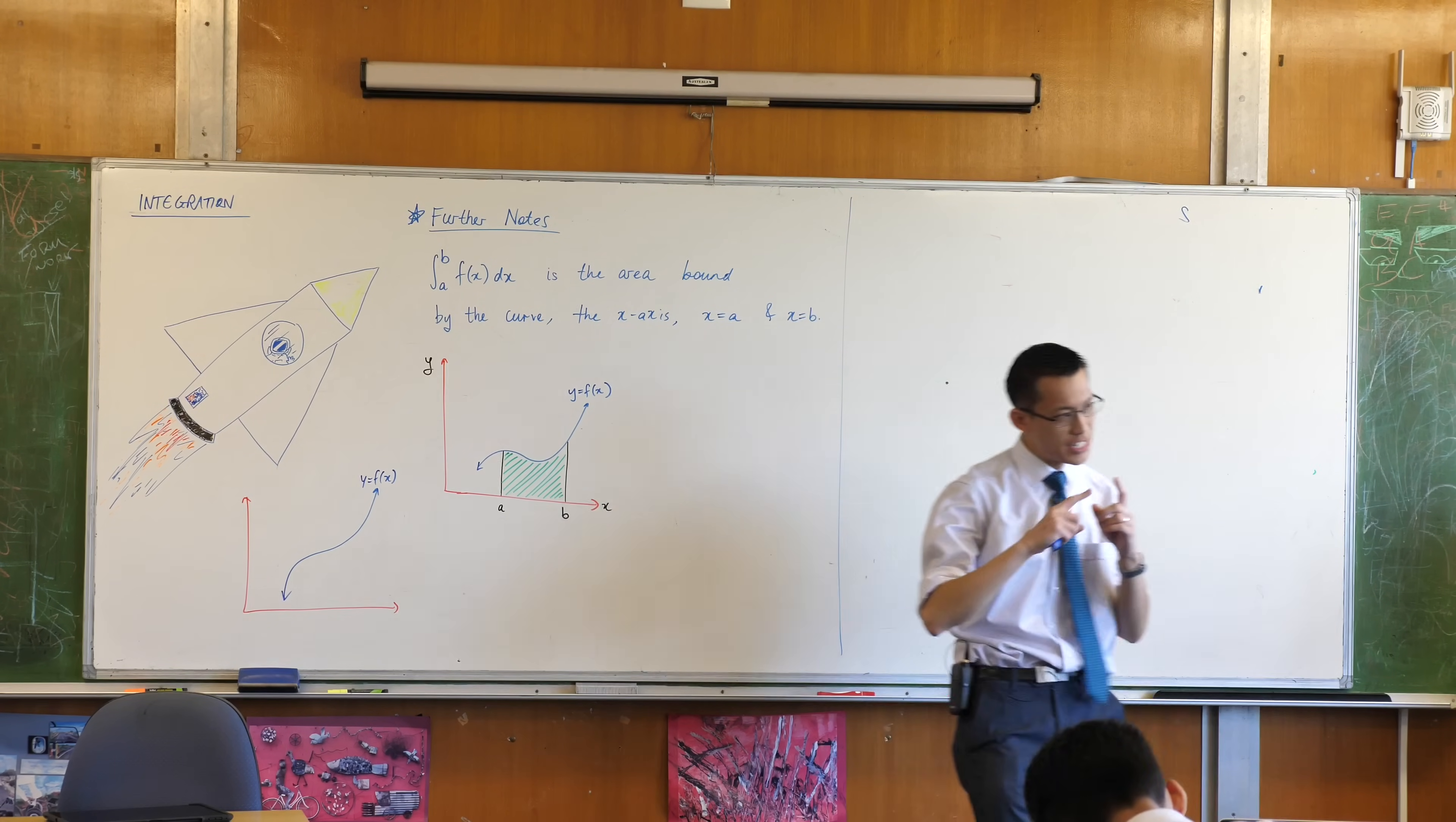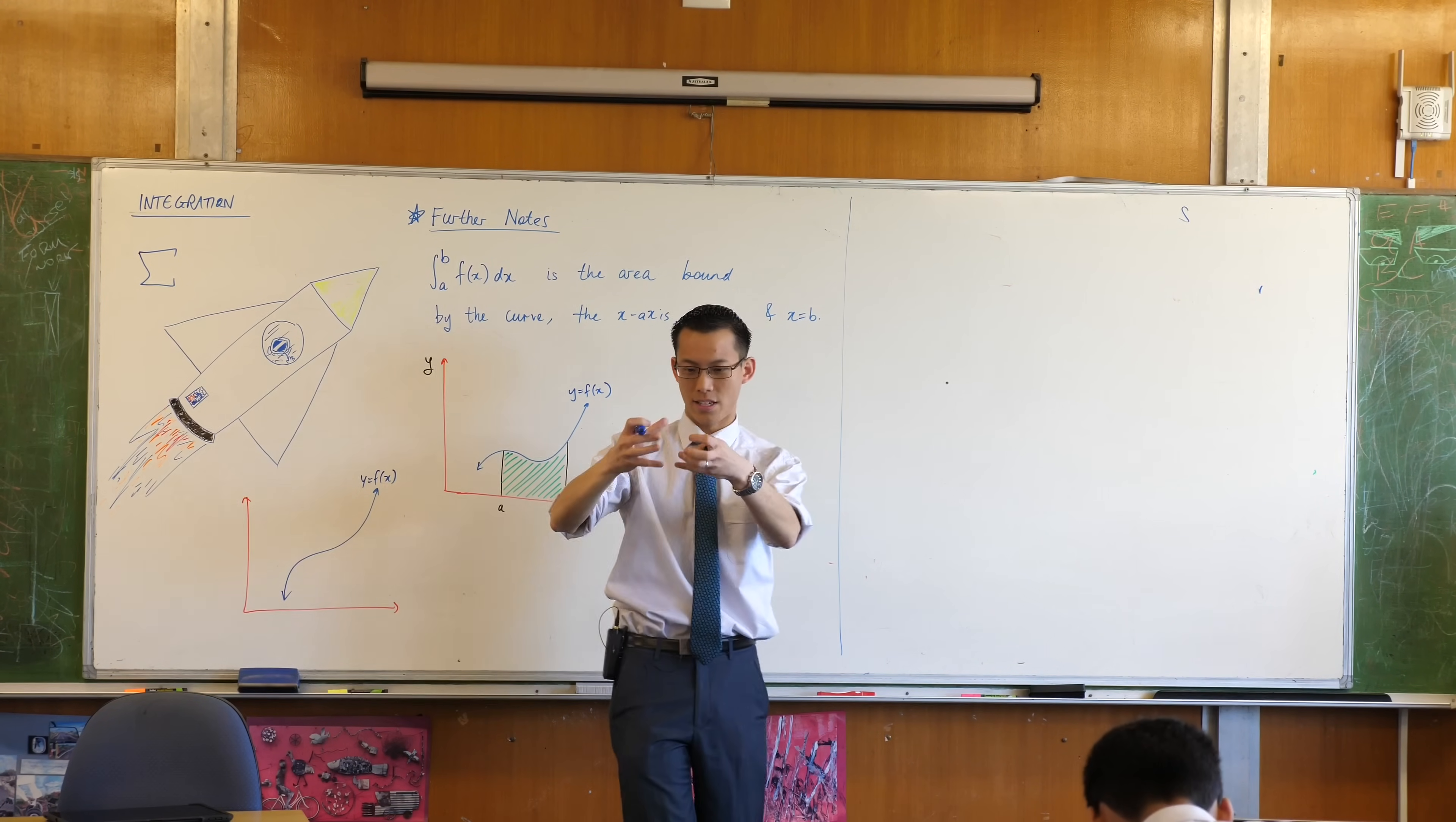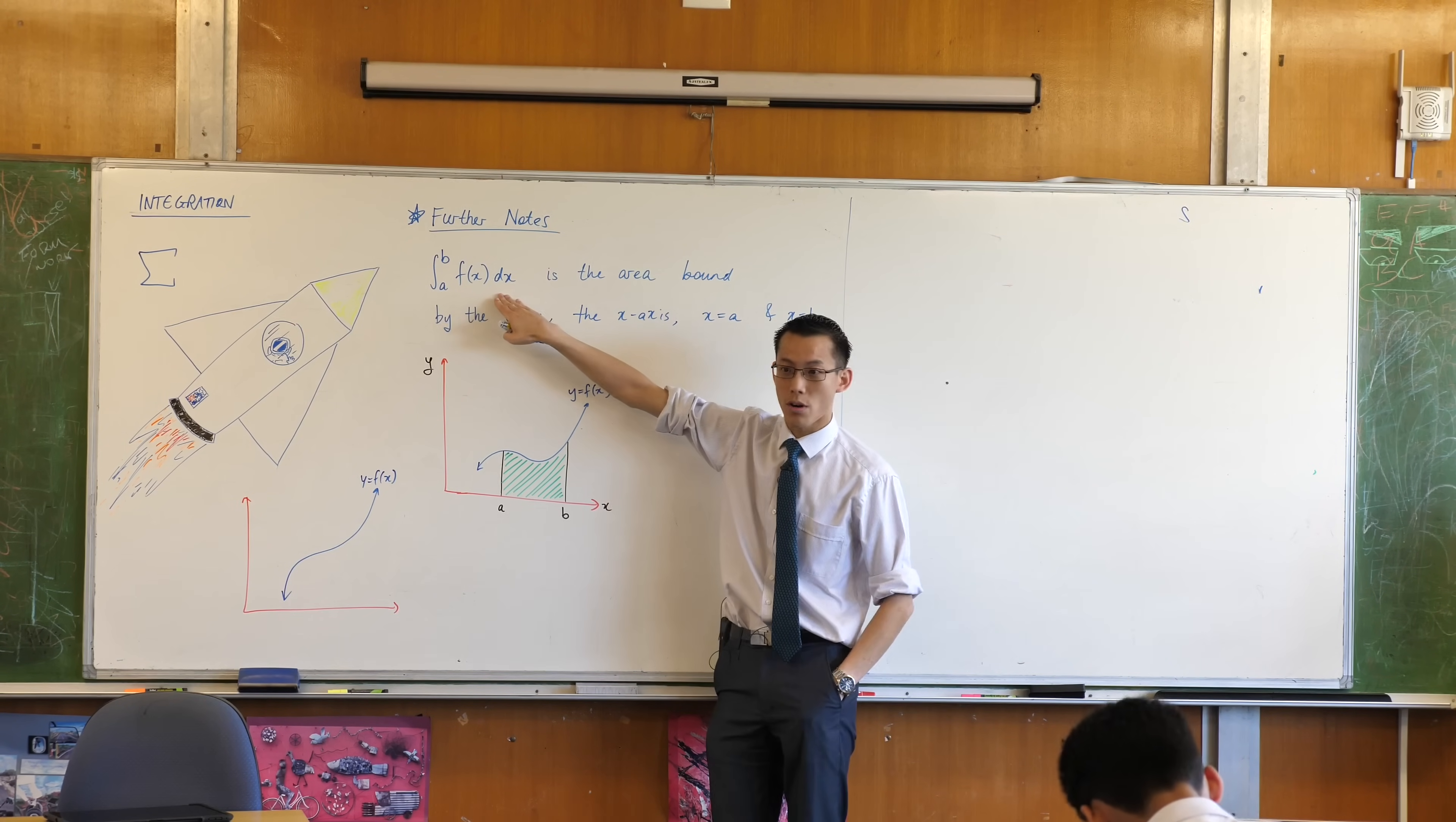However, the difference between this and our old friend sigma notation is that sigma notation treats everything in nice big integer blocks. It's like there's the 1 and then the 2 and then the 3. Whereas the integral notation actually borrows an idea from calculus, taking the limit as this dx business goes towards 0.